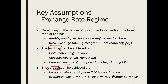In the Bretton Woods system, the US dollar is fixed with gold, and other currencies are fixed with the US dollar. The Bretton Woods system gave the US dollar the central role in the financial market, but this role has been weakening since the 2008 global financial crisis. Other currencies like the euro, the Chinese yuan, and the Japanese yen are trying to challenge the central role of the US dollar over the years.